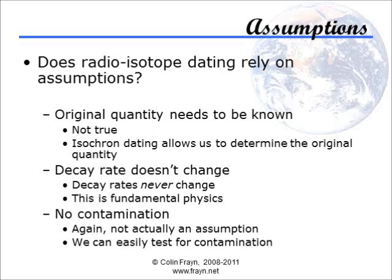Radiometric dating methods have been hugely improved over the last century since their invention. The modern techniques can control for, or in many cases totally avoid, all of the complaints that creationists have about the massively oversimplified caricatures they claim represent the cutting edge of modern scientific technique. Creationists often state that radiometric dating relies on several flawed assumptions. In reality this simply isn't true. In practice, scientists today use a process called isochron dating, which makes none of the assumptions that creationists complain about.